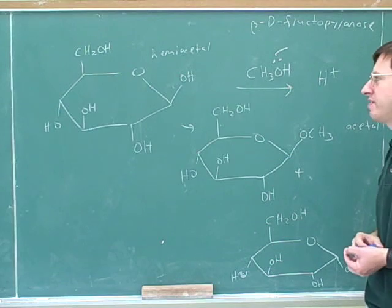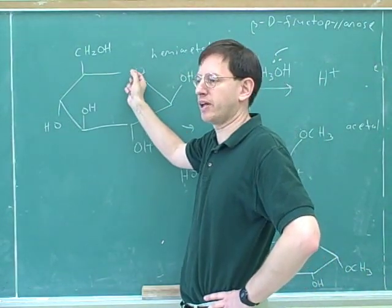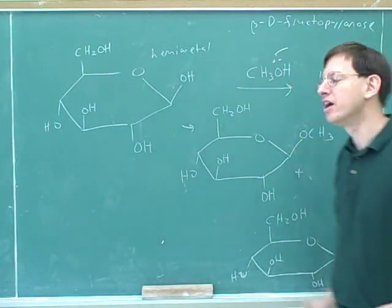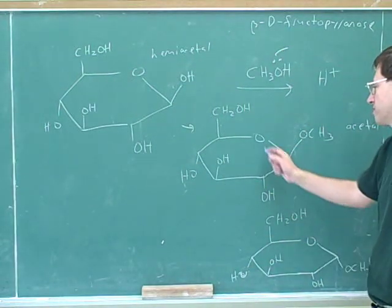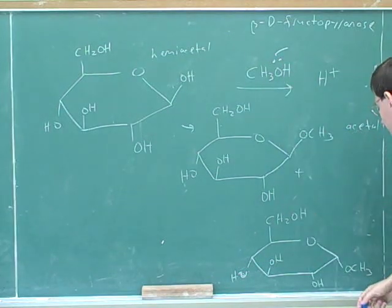Of course, we would expect that because now we've had two alcohol attacks. The first alcohol attack was when we formed the ring in the first place, and now we've had a second alcohol attack. So now we really have it in a Category 3 type reaction. First from the alcohol that was intramolecular, and then from the intermolecular alcohol attack.